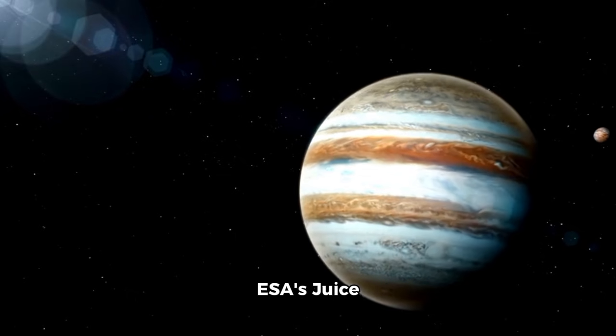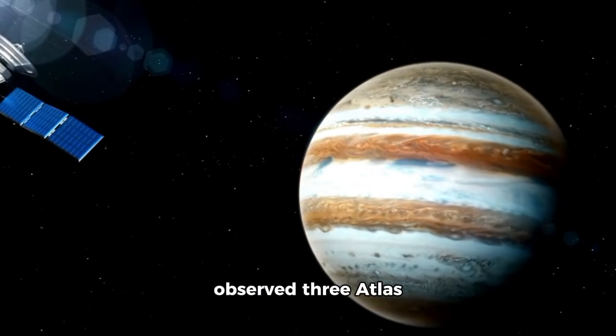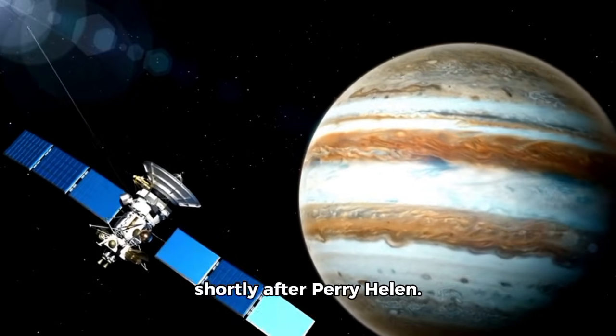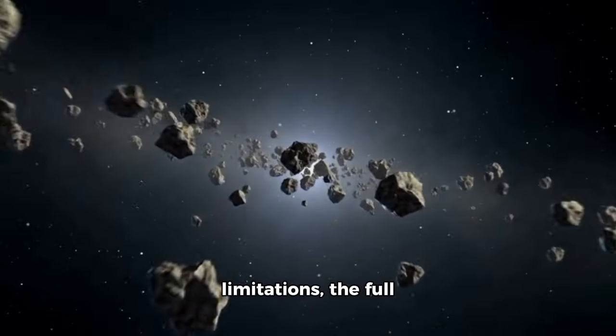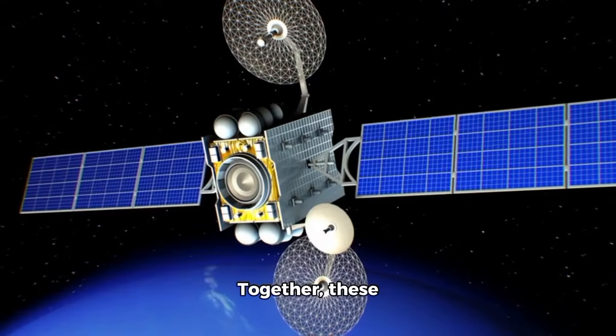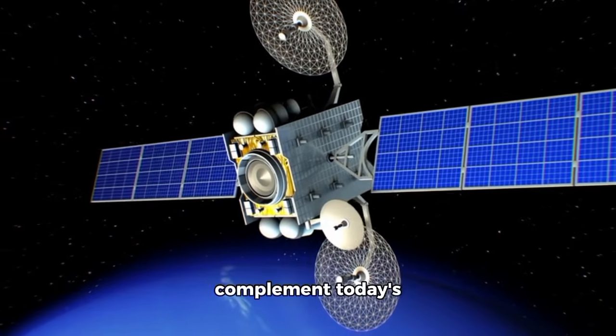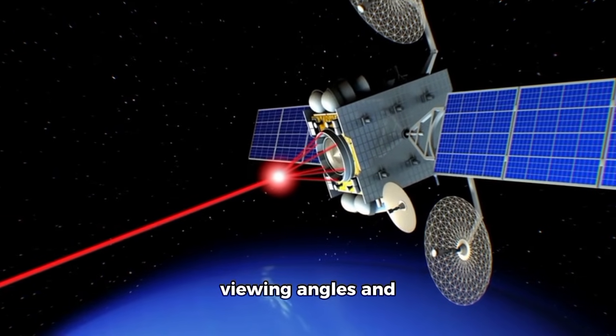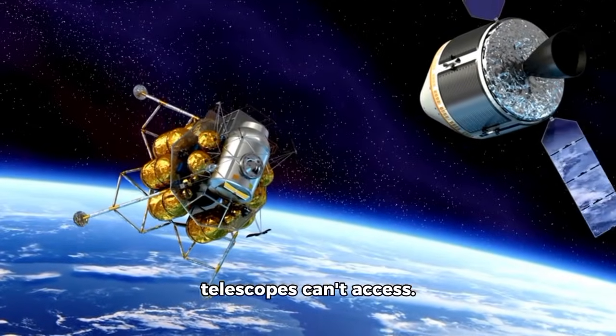ESA's JUICE spacecraft, also en route to Jupiter, observed 3I Atlas in early November, shortly after perihelion. Due to transmission limitations, the full science data from JUICE won't reach Earth until February 2026. However, preliminary images already show clear signs of activity with hints of two tails extending from the nucleus. Together, these spacecraft observations complement today's closest approach data by offering different viewing angles and wavelengths that ground telescopes can't access.